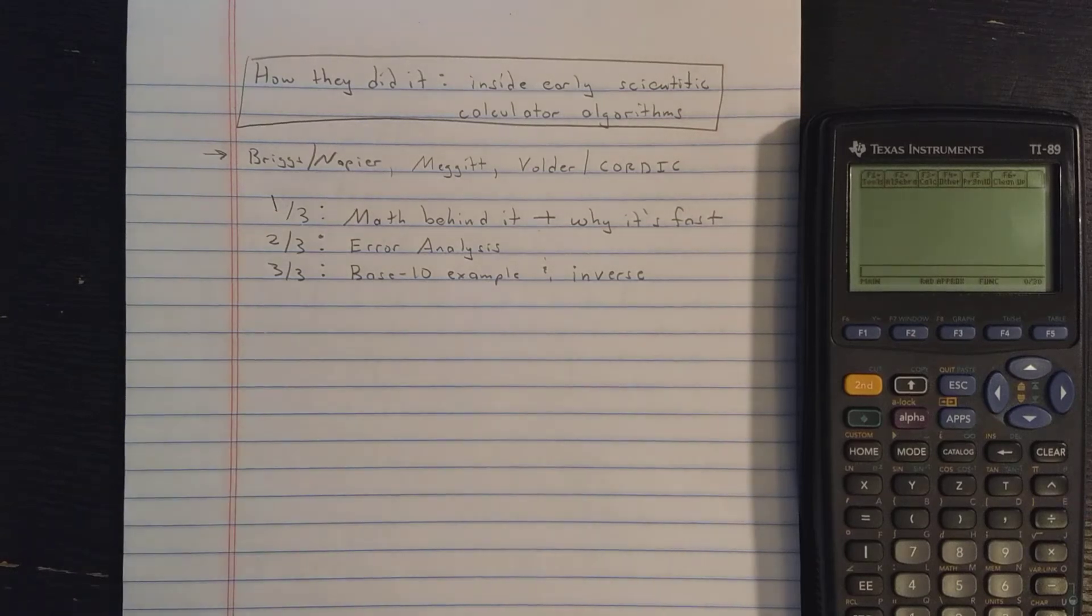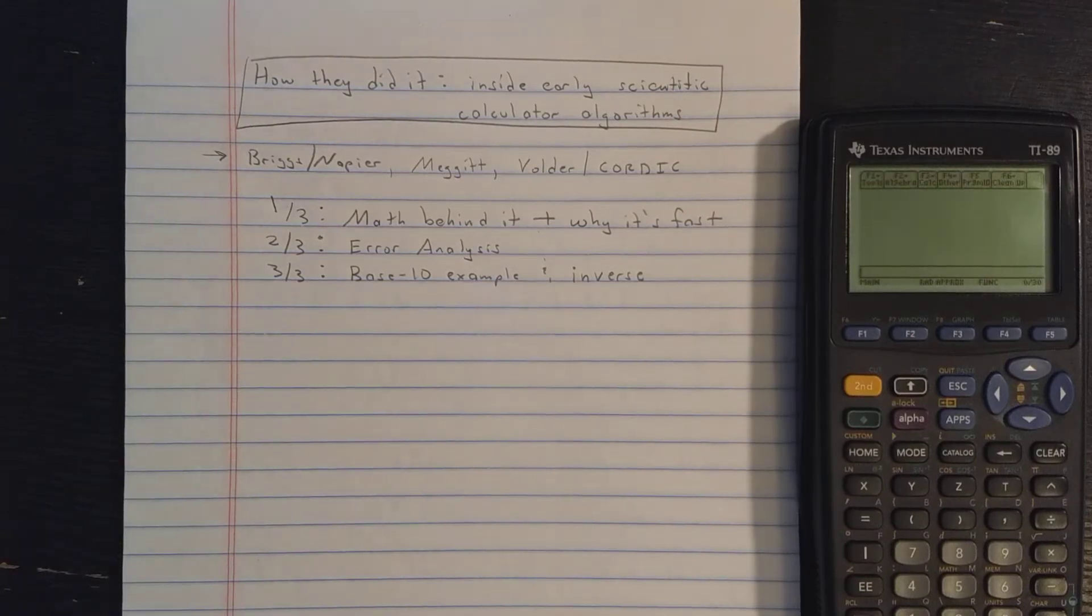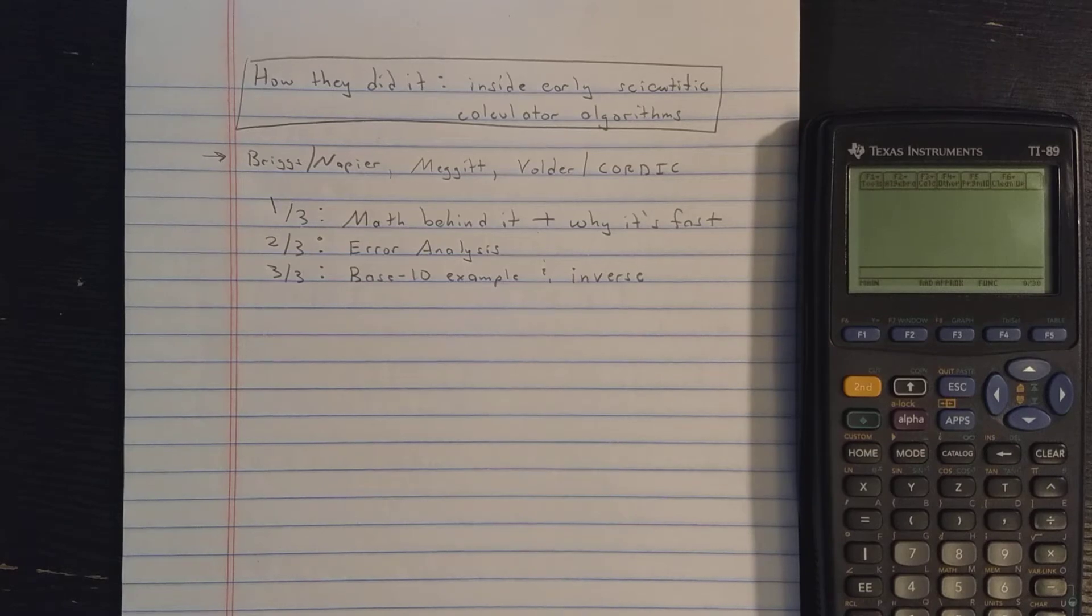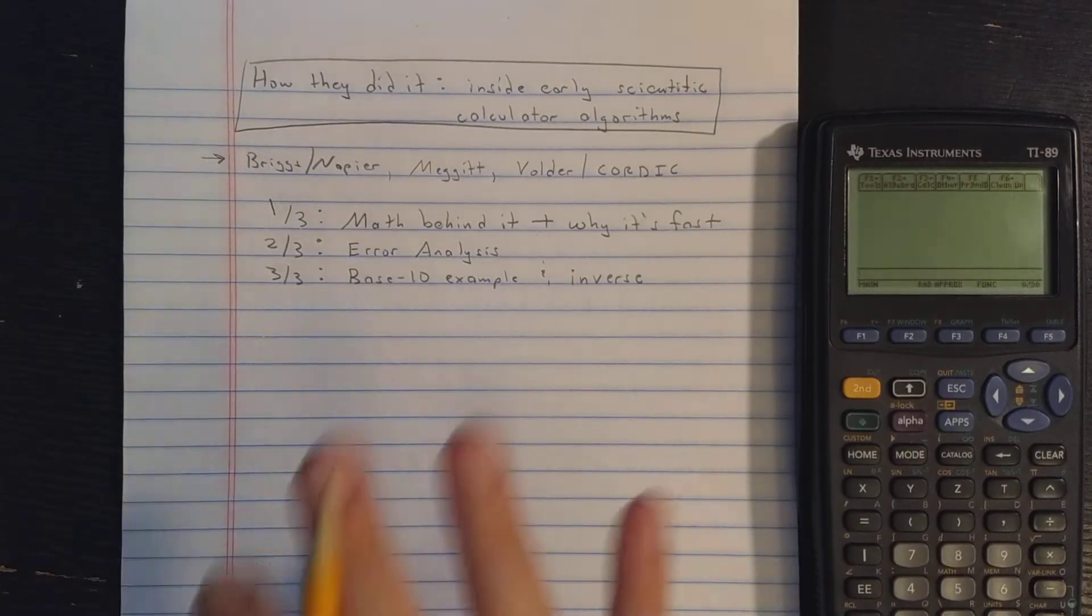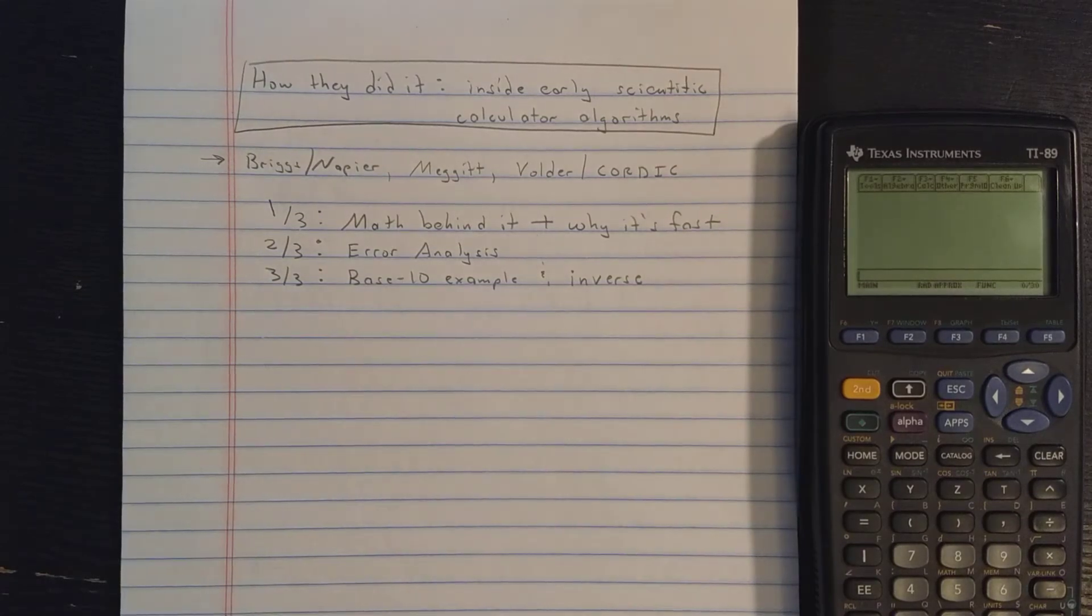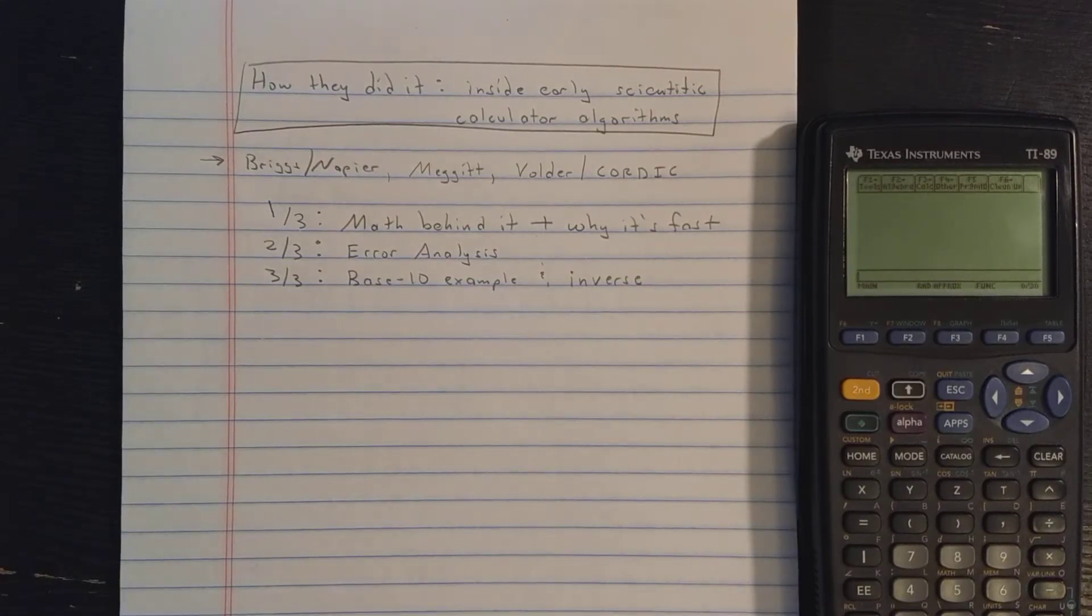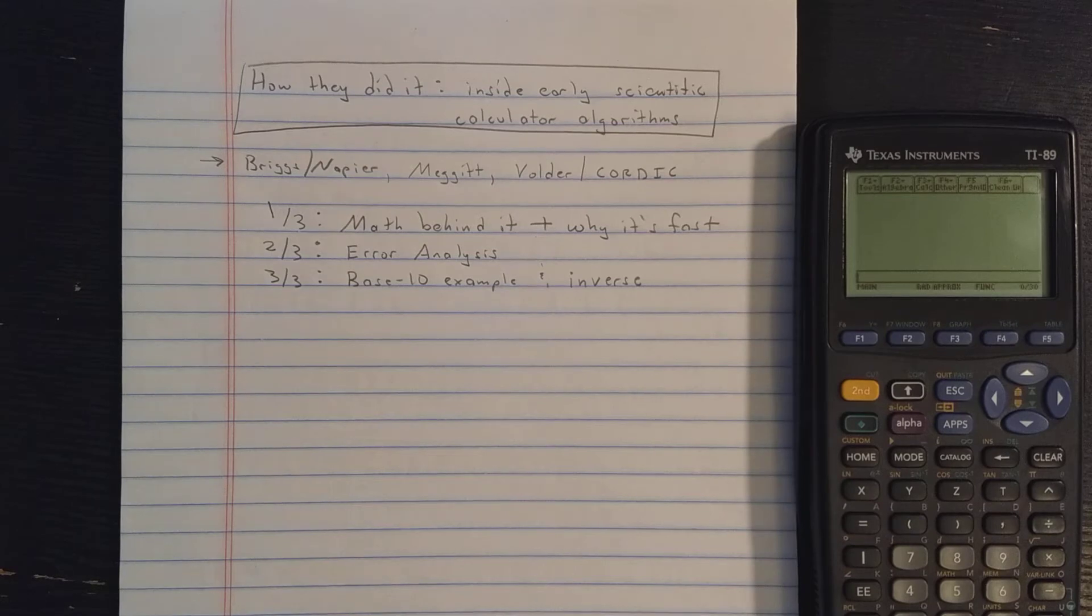Welcome back. After my recent videos about the HP-35 and TI-30, a few people approached me asking for a video on how the early calculators did it. In other words, how they computed transcendental functions so fast with such limited hardware.